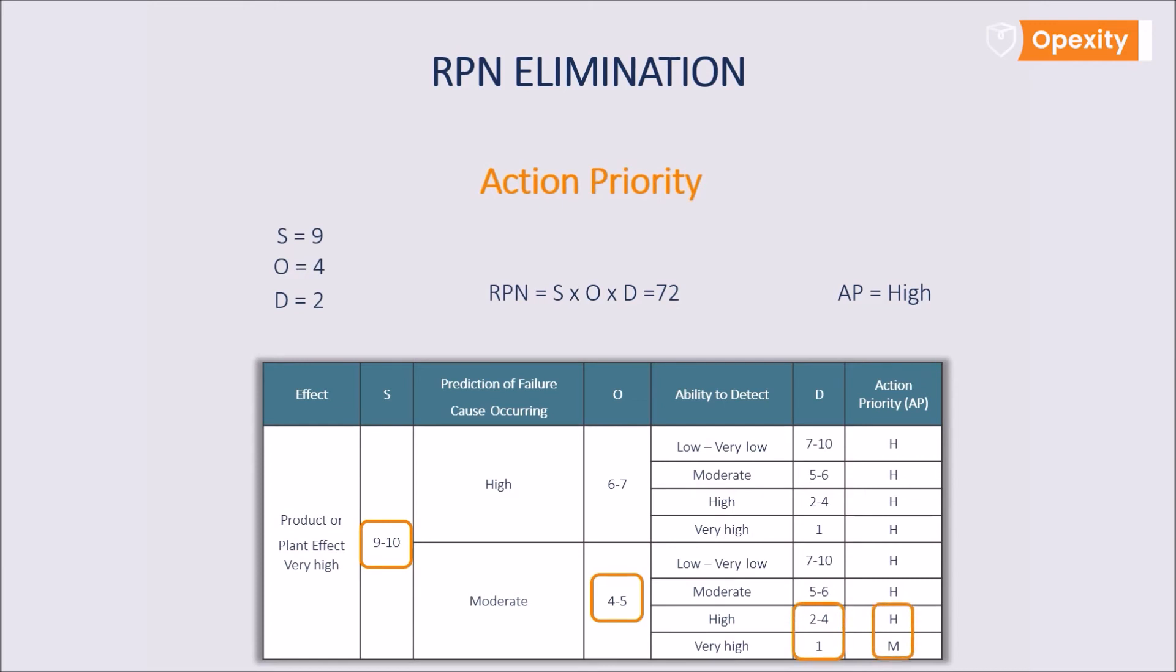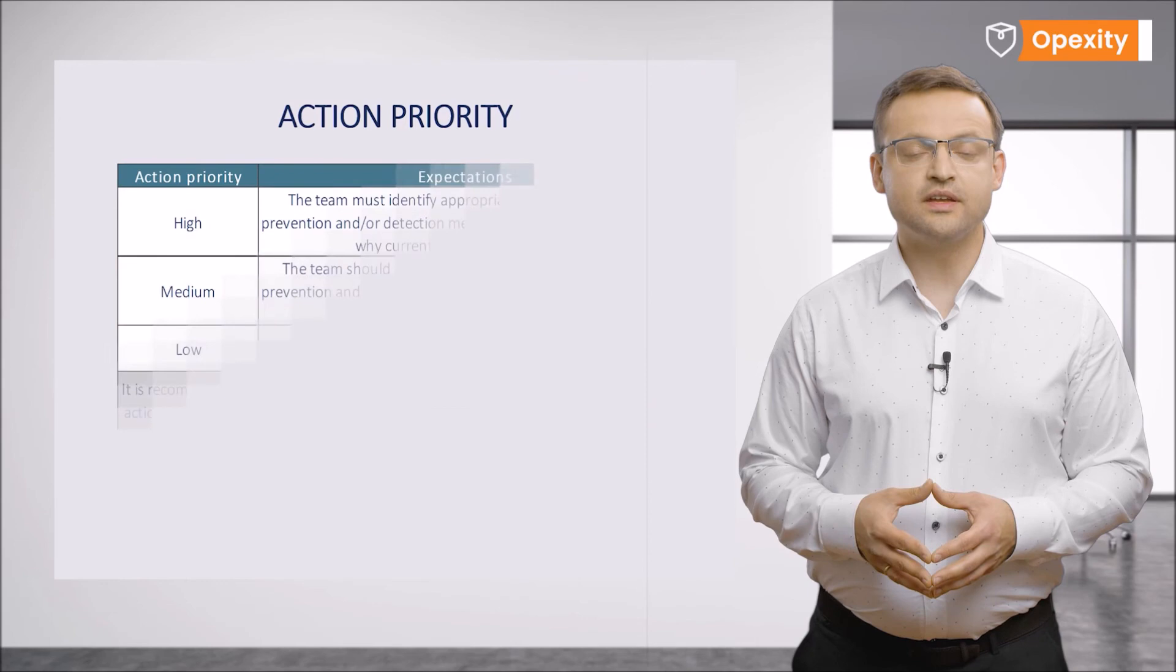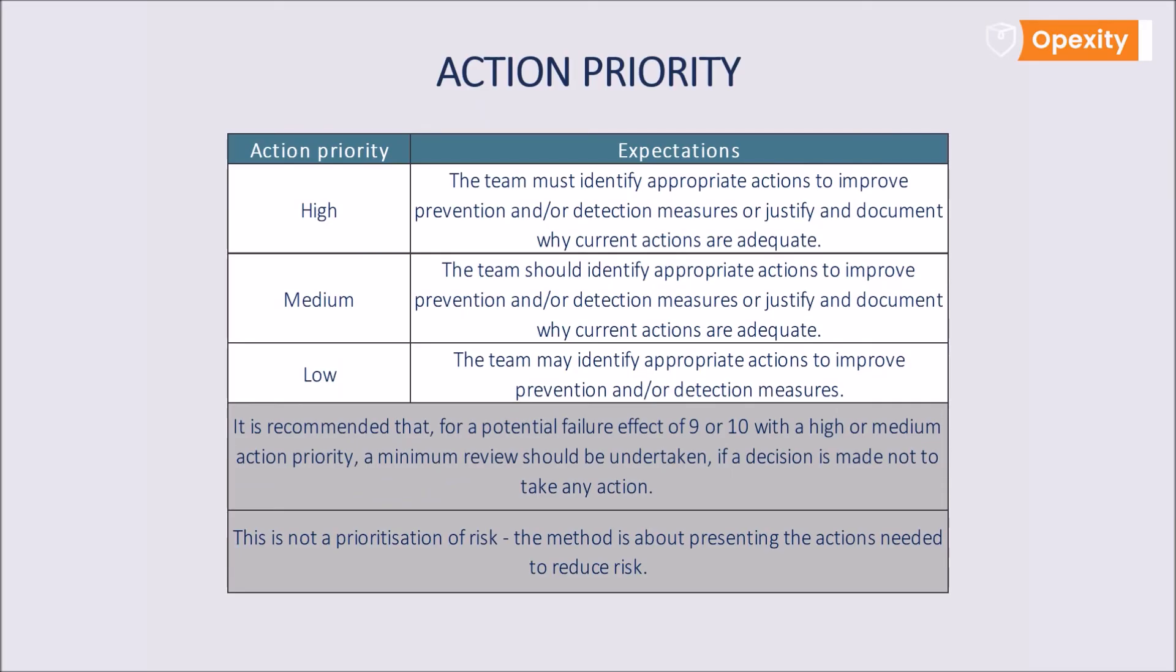It is simple, isn't it? In the new approach, there are three types of action priority: high, medium, and low. Remember that in contrast to the risk priority number from the previous approach, the action priority is not an indicator of risk prioritization. The method presented is a method for prioritizing the actions necessary for risk reduction purposes.